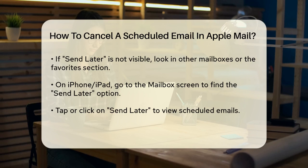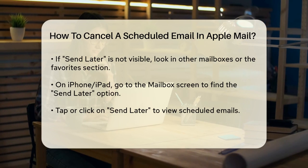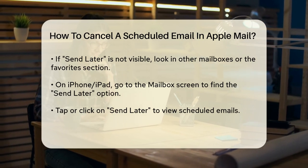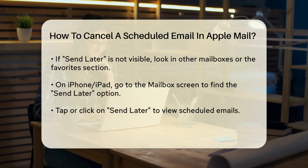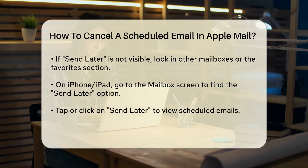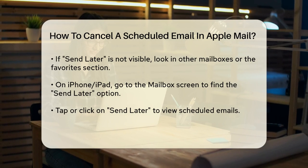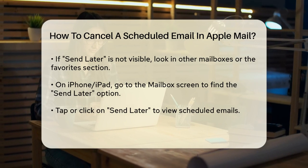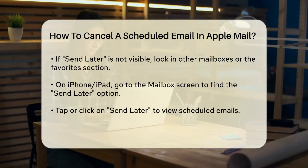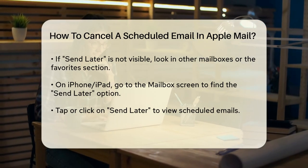Once you've located the Send Later mailbox, tap or click on it to see all the emails you've scheduled to send later. Now select the email you want to cancel. On your Mac, you can simply click on the email to open it. On your iPhone or iPad, tap on the email to view its details.